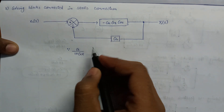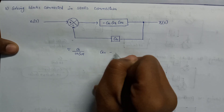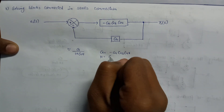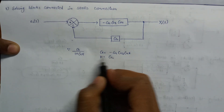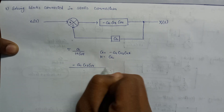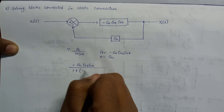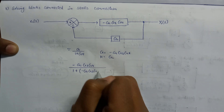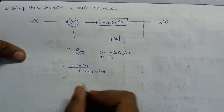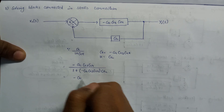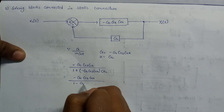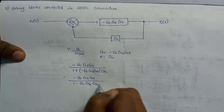Here the value of G equals minus G1·G3·G4, and the value of H equals G2. Substituting the values: the transfer function becomes minus G1·G3·G4 over 1 plus (minus G1·G3·G4)·G2. After simplification, the overall gain becomes G1·G3·G4 over 1 minus G1·G2·G3·G4.